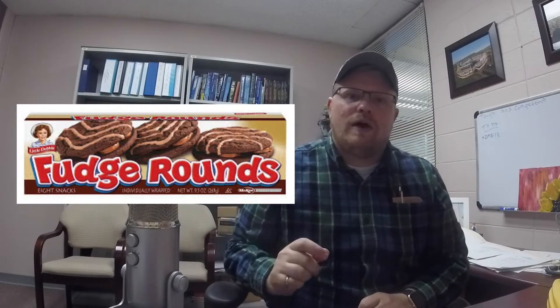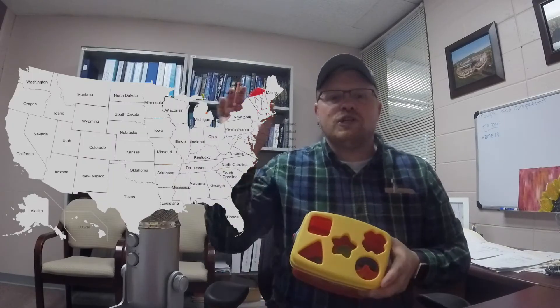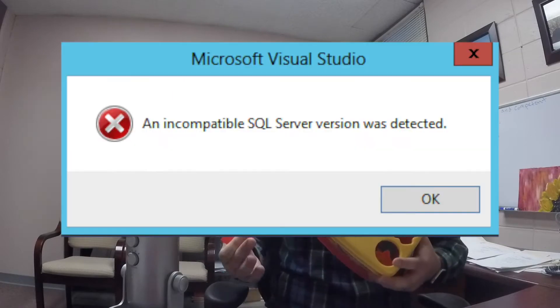Have you ever tried to fit a square block in a round hole? Well, dad of the year over here, I borrowed my daughter's toy to explain what I'm talking about. If I try to put this square block into the round hole, it just doesn't fit. The initial states, square block, round hole, are incompatible, and so the result is that it just doesn't work.